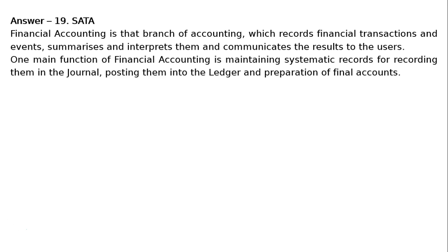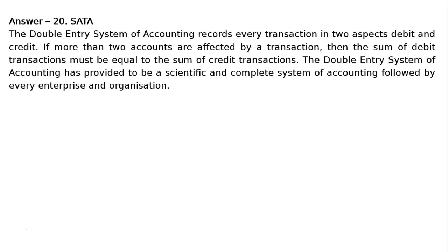Question 20: Write a short note on the double entry system of accounting. Answer 20: The double entry system of accounting records every transaction in two aspects — debit and credit. If more than two accounts are affected by a transaction, then the sum of debit transactions must be equal to the sum of credit transactions. The double entry system has proved to be a scientific and complete system of accounting, followed by every enterprise and organization.